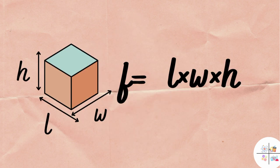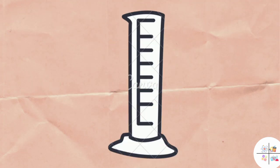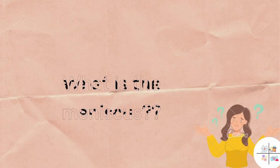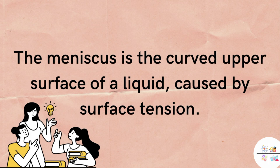For liquids, a measuring cylinder can be used. The proper way is to look straight at the meniscus. What is the meniscus? The meniscus is the curved upper surface of a liquid caused by surface tension.